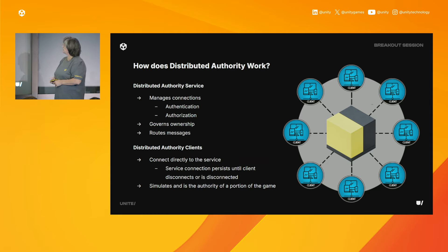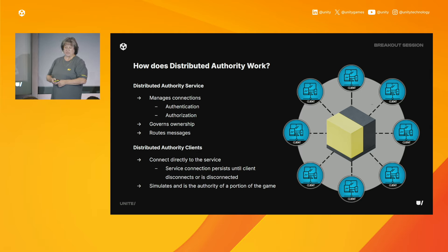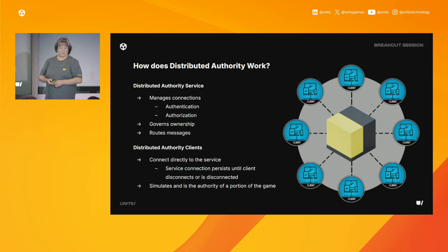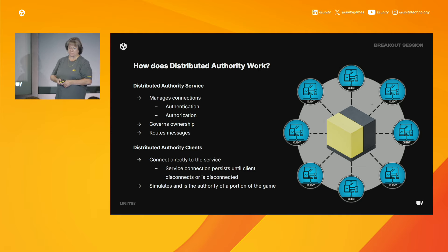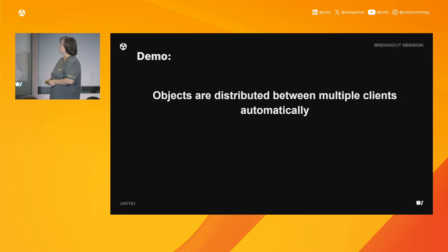How does distributed authority work? The distributed authority server oversees all client connections, manages client authentication to allow only authorized users, manages ownership of network objects, and routes messages between clients. The distributed authority client establishes a direct connection to the server which stays active until it disconnects. During this connection, clients simulate and maintain authority over a specific portion of the game.